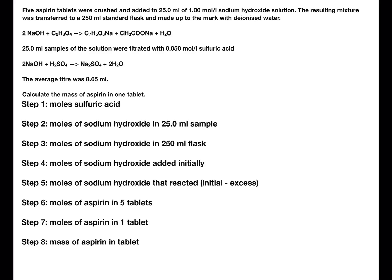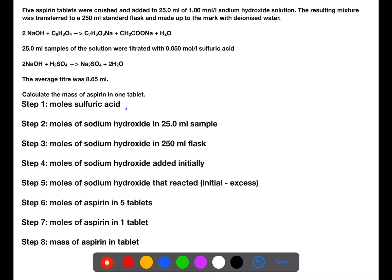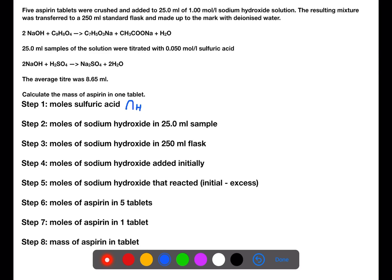First of all, we're going to find the moles of sulfuric acid that were used, using concentration times volume. The concentration is 0.05 and the volume is 0.0865 litres. This gives a number of moles of sulfuric acid of 0.0004325.